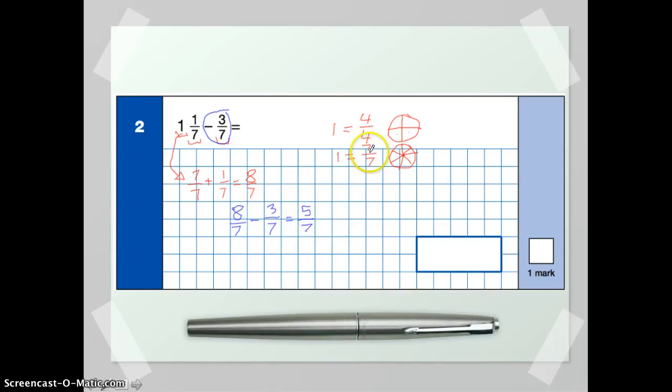Because essentially what we've done is we've said we had eight pieces of the pie, each of which was worth a seventh. And then we took away three of those pieces. So instead of eight pieces, we've only got five of them remaining. So it's going to be five over seven.